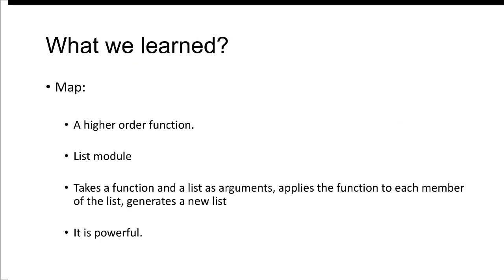So what did we learn? In this video, we looked at the OCaml higher-order function map — its implementation, its type, and a few more examples. The map implementation is given in the List module, so you don't have to write the implementation; you can use List.map as shown in the example file. In summary, map takes a function and a list as arguments, applies that function to each member of the list, and generates a new list, with a lot of applications.